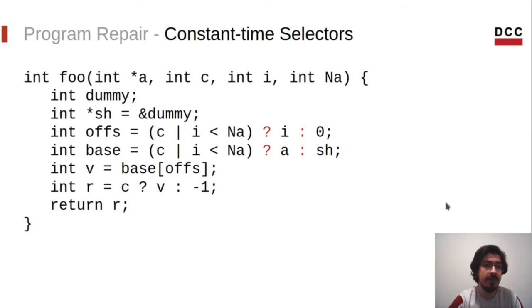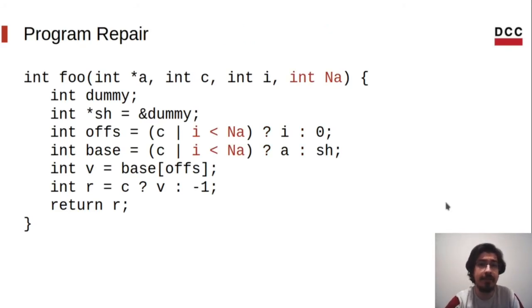For that, we use constant time selectors, which in this example are the ternary operators. Let's take a final look into this function. We have the memory contract discussed before. We use a shadow memory for accesses that should not occur in the original code and are not safe within the bounds imposed by the memory contract. And we use constant time selectors to eliminate the difference in execution time due to conditional statements. And there it is - we have a function that is operation invariant, is memory safe in the sense that bugs that would not occur in the original version will still not occur in the new version, and is data invariant whenever i is within the constraint imposed by the memory contract.